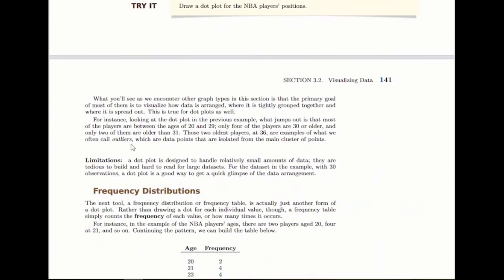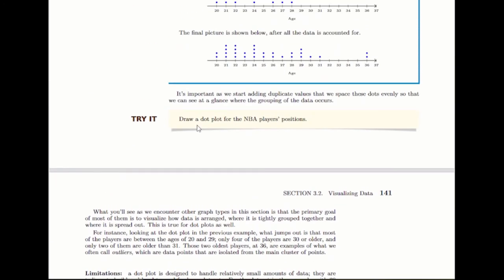You can also draw dot plots for categorical data. You can practice working on a dot plot for the positions. The same idea holds, you just put the positions, those categories, on the scale, and then draw dot plots for them as well.